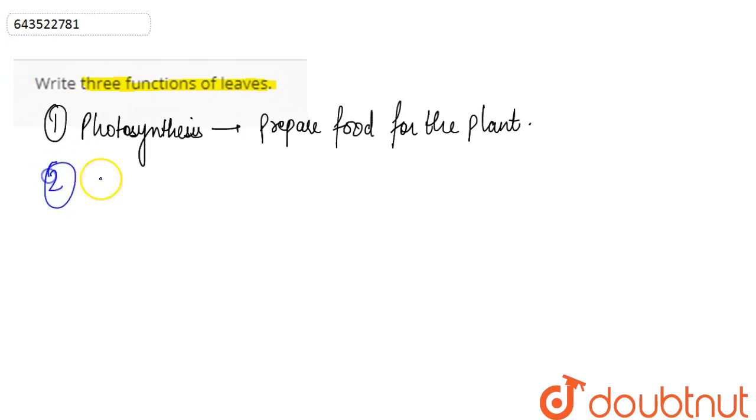Number two is to carry out the process of transpiration. Transpiration is simply the loss of water in the form of water vapors from the leaves through the stomata.